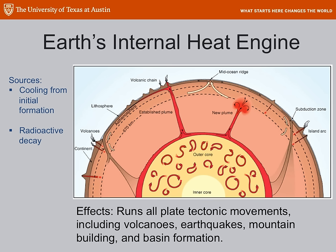What about earth's internal heat engine? Heat flow from the earth is measured in microwatts per meter squared — compare that to solar radiation in watts per meter squared. So this is a very small piece of the overall heat budget on earth, but it's very important. Heat flows out of the earth at places like volcanoes and other warm spots, so it's unevenly distributed around the earth. It comes from two sources: the cooling of the original molten hot earth, and radioactive decay.